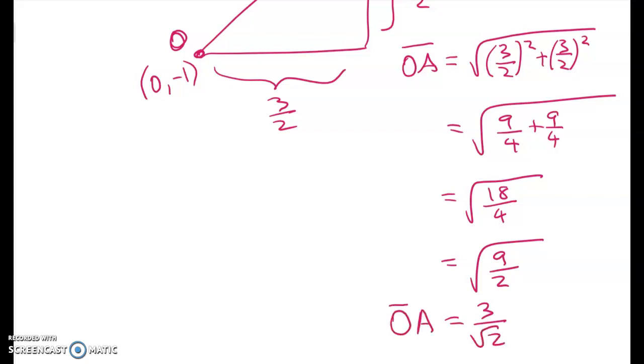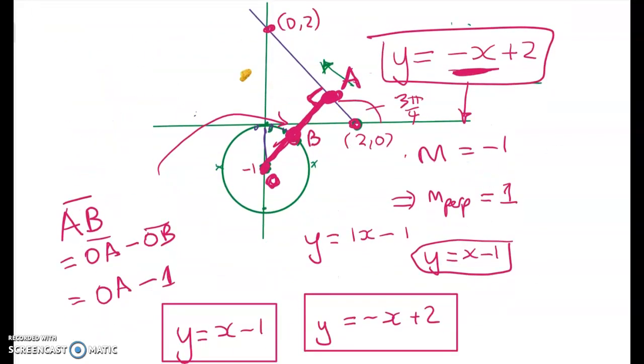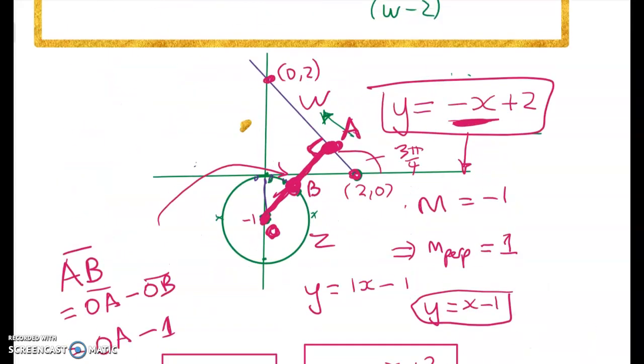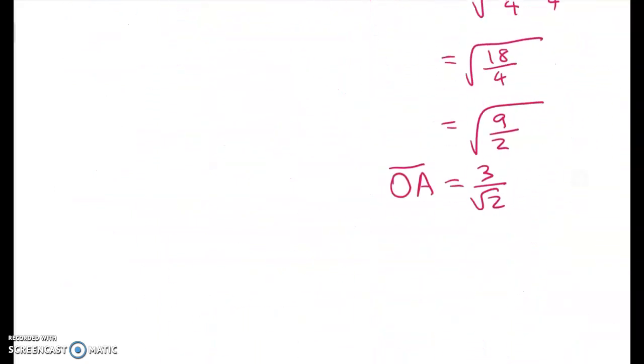So that's distance OA. That means that the shortest distance from z to w is OA—so all of this, which is my 3/√2—take away this bit here. So AB = 3/√2 - 1. And here's the nice GeoGebra picture here.